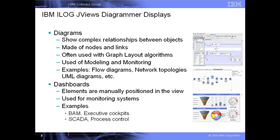A diagram built with JVUES allows the Java developer to define the exact look and feel for each of the objects, called nodes, and their interconnections, called links or edges. When the diagram gets large with many nodes and links, it often becomes unreadable because the nodes and links are not positioned effectively. Diagrammer addresses this issue by supplying graph layout algorithms, which automatically rearrange the elements on the screen to make them more readable.